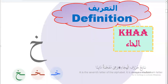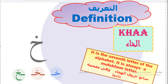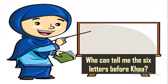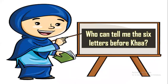Let's go to the second point: preparation. Let's start with the definition of Kha. Kha is the seventh letter of the alphabet. It is always a mufakham letter — mufakham means it has a heavy sound. It's Kha, not Kha (light). Who can tell me the six letters before Kha?